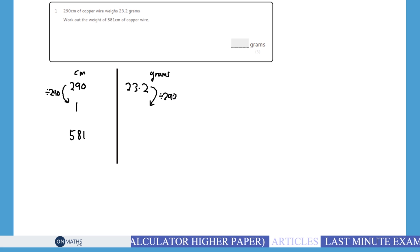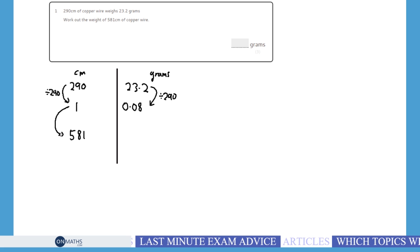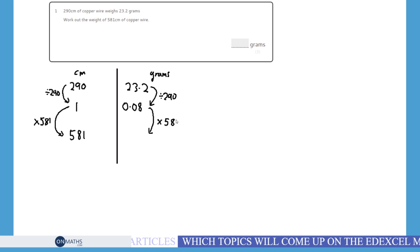I get my trusty calculator out. 23.2 divided by 290 equals 0.08. There we go, 0.08. So that gives me one centimeter. But the question doesn't ask me for one centimeter; it asks me for 581. So I'm going to have to times 1 by 581, and I'm going to do the same this side, because whatever you do to one side, you've got to do to the other.